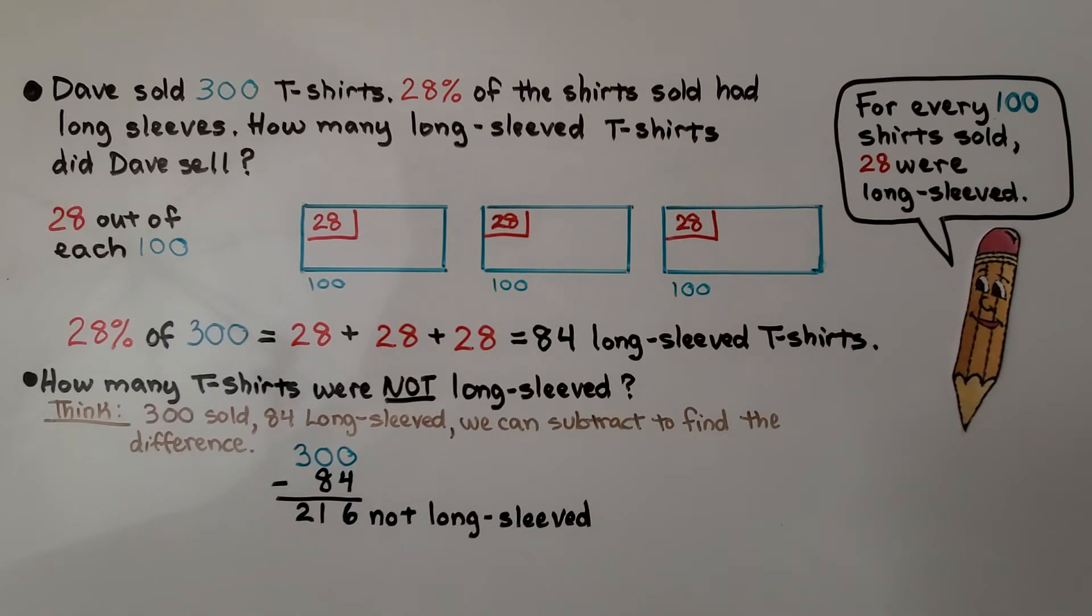Now, how many t-shirts were not long sleeved? Well, we think 300 were sold, 84 were long sleeved. We could subtract to find the difference. If he sold 300 and 84 were long sleeved, that means 216 were not long sleeved.